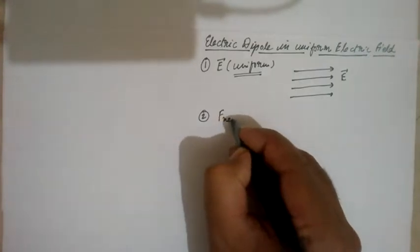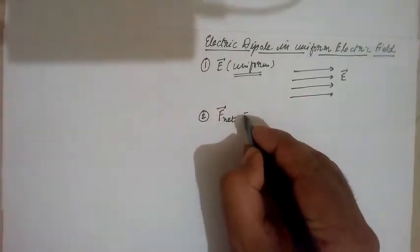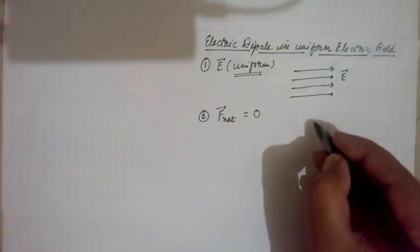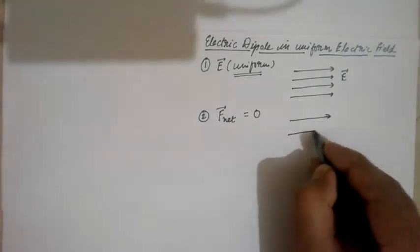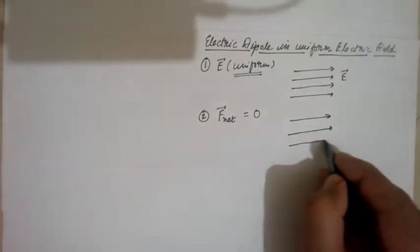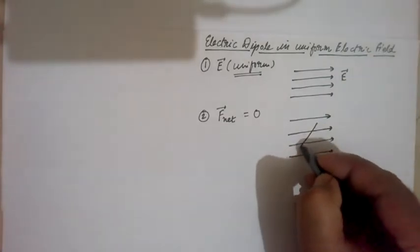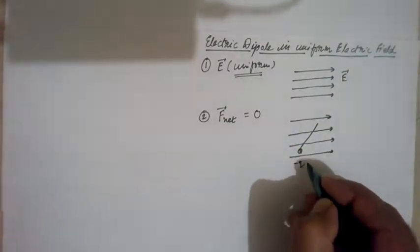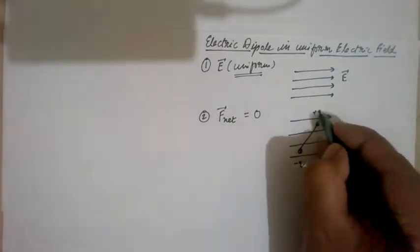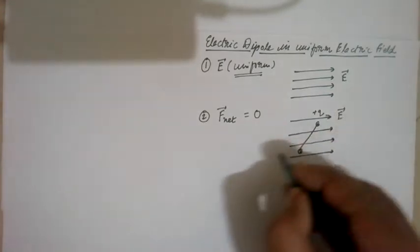Net force on an electric dipole placed in uniform electric field is zero. This is uniform electric field. We have a dipole, minus Q charge and plus Q charge, placed in uniform electric field E.